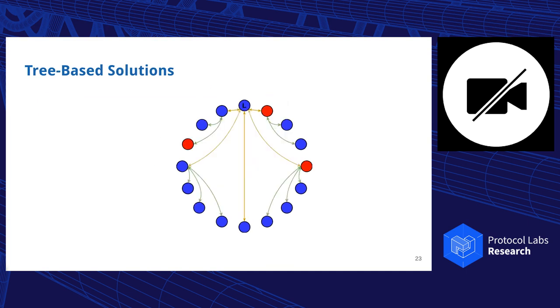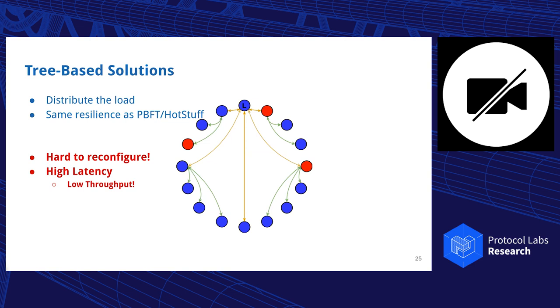Tree-based solutions avoid this. They're similar to HotStuff, where they create a different communication architecture, where certain processes will relay the messages. That way we are able to distribute both the communication load and the processing load, while maintaining the same resilience as PBFT and HotStuff, and the overall same guarantees. The problem is that these approaches are relatively hard to configure, and they have a problem of high latency.